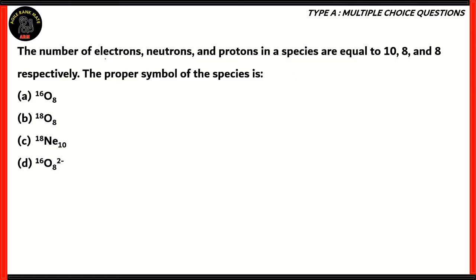Remember, the number of electrons is 10, the number of neutrons is 8, and the number of protons is 8. Using the number of protons, neutrons, and electrons, we can find the correct species. The number on the top is what we call the mass number, and the number at the bottom is the atomic number, and the number here is what we call the charge.